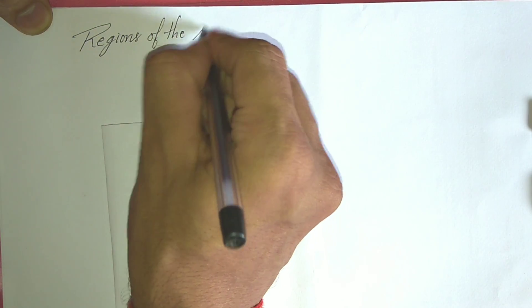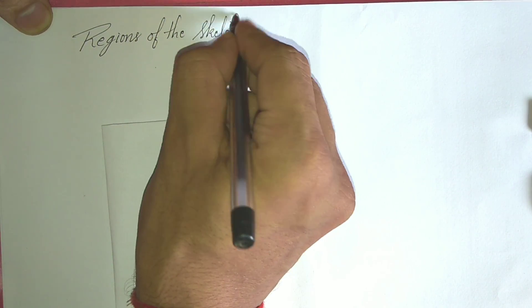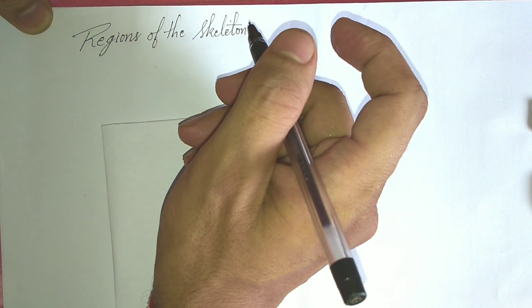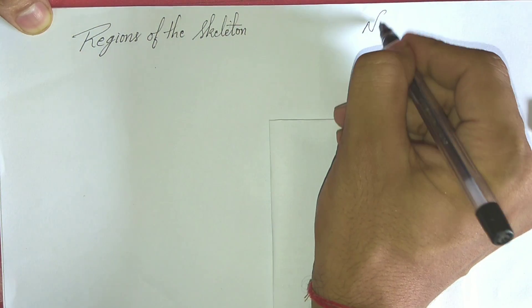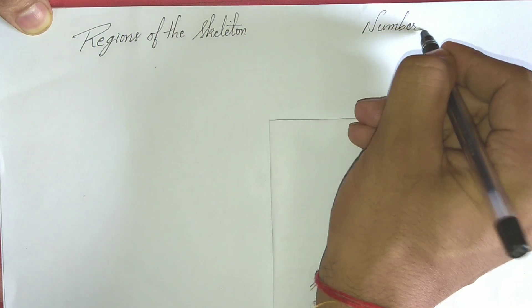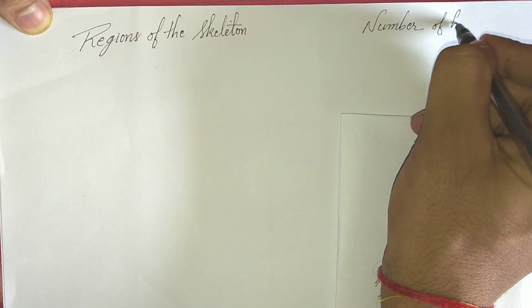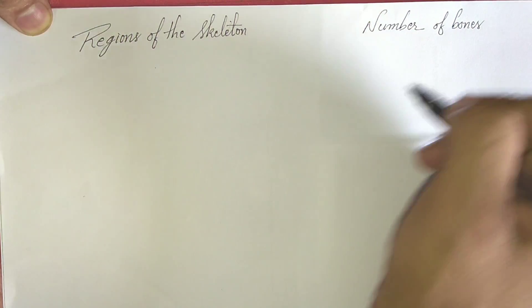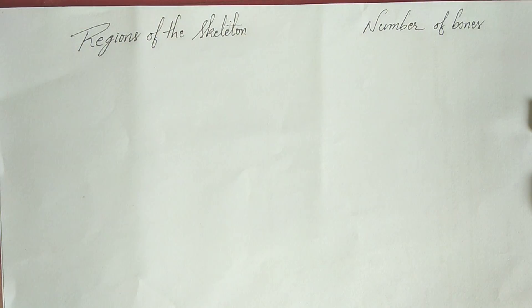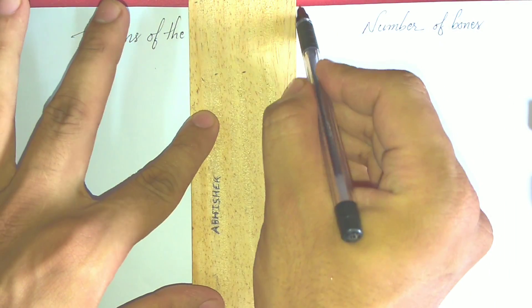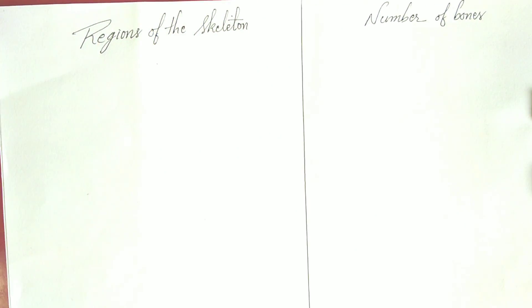The regions of a skeleton. We will label the bone and number of bones, giving a line here.